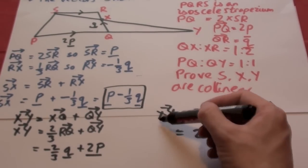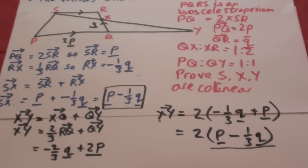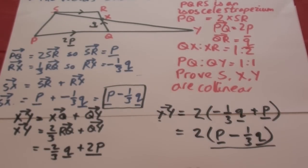So they are parallel because they share a common point of X. We know they lie upon the same line. These lines are parallel in the same direction. It's collinear.